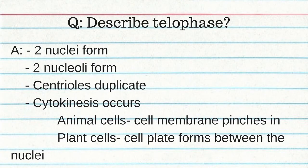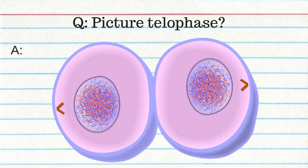Telophase: two nuclei form, the centrioles duplicate, and cytokinesis occurs. In animal cells, the cell membrane pinches in. In plant cells, the cell plate forms between the nuclei. Cytokinesis is cytoplasmic division. Cyclins are proteins that regulate the timing of the cell cycle.